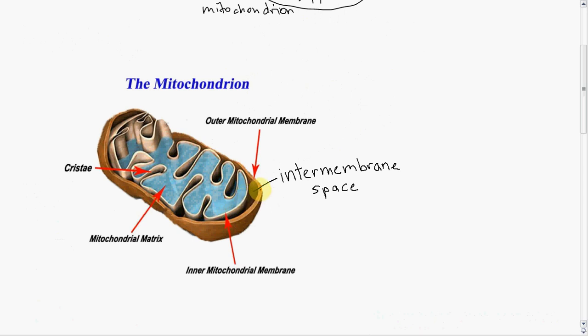It separates out this intermembrane space, very logically named, in between the outer and inner membranes. And also this matrix area, shown in blue. It's in the matrix, not to be confused with the movie, where the citric acid cycle takes place. I'll abbreviate that CAC.